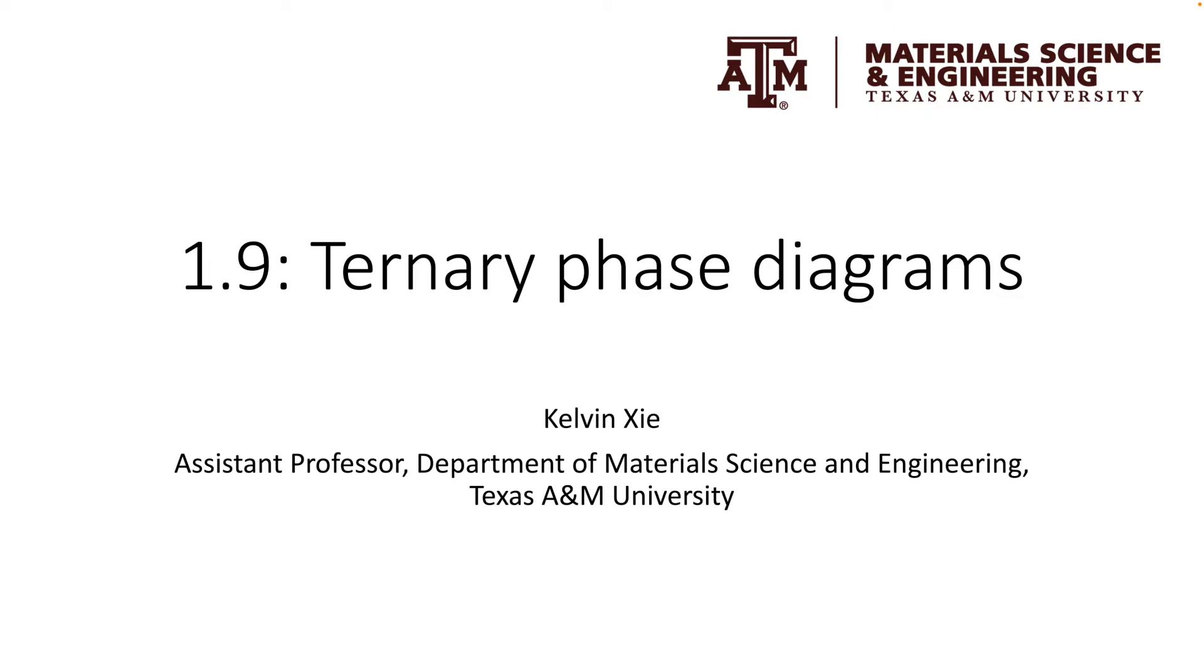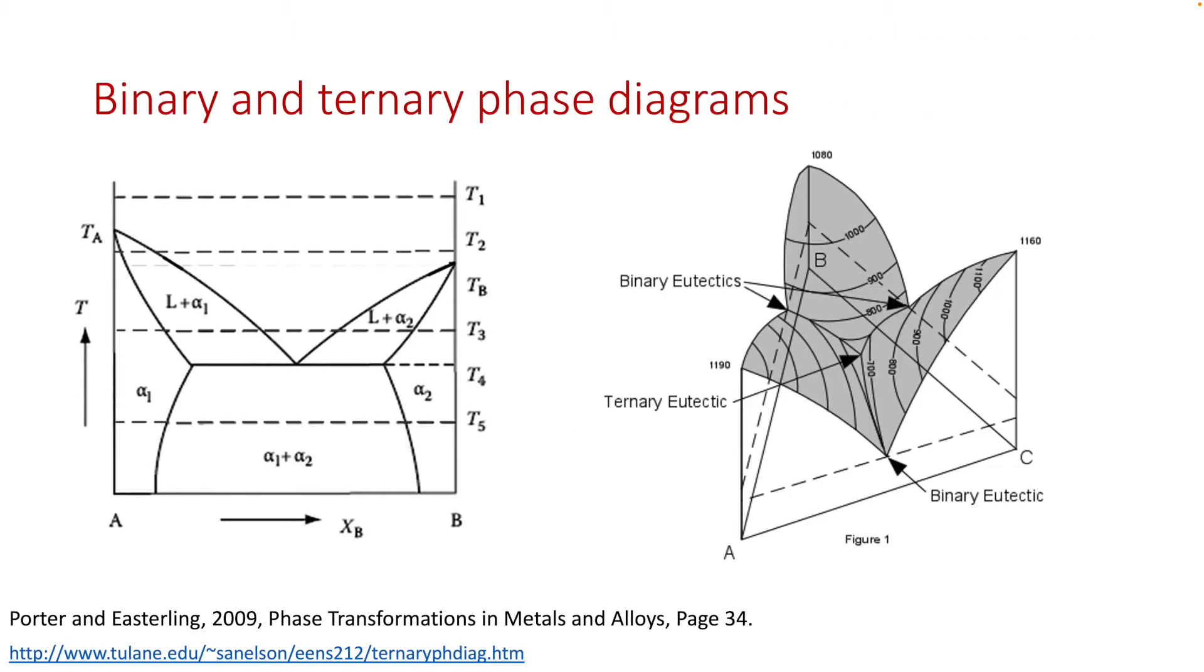By now, we should be very familiar with the binary phase diagrams. In binary phase diagrams, we have A and B two components, and the phase diagram itself is a two-dimensional map.